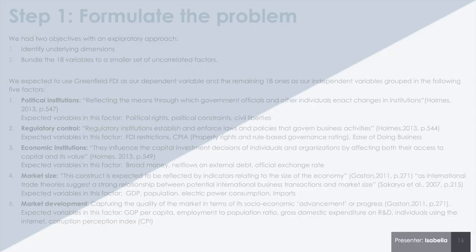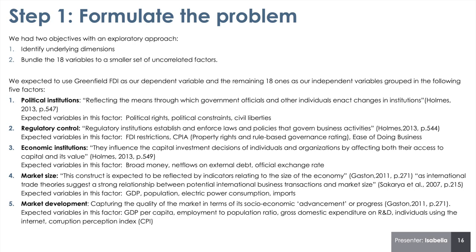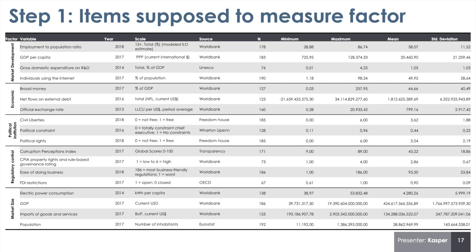Now we come to our factor analysis. The first step is to formulate the problem. We had two objectives with our exploratory approach: first, to identify underlying dimensions, and second, to bundle the 18 variables into a smaller set of uncorrelated factors. We expected to use Greenfield FDI as our dependent variable and the remaining 18 as independent variables grouped in five factors: market development, economic, political institutions, regulatory control, and market size.